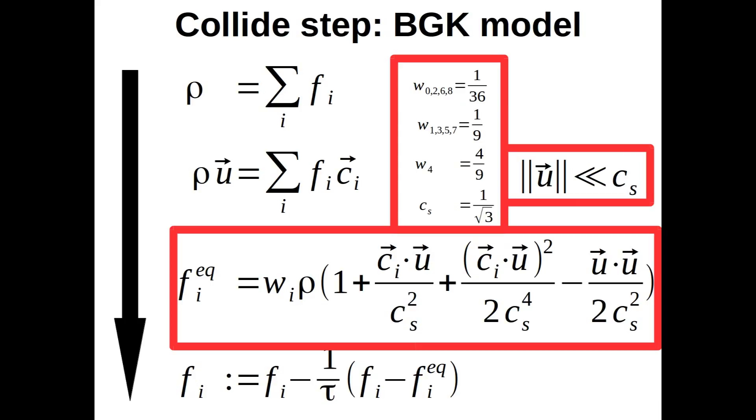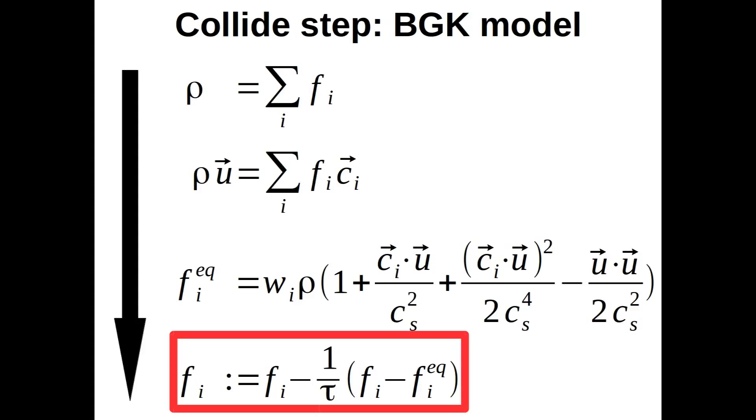Finally, we relax our distributions Fi towards the equilibrium distribution at a given collision frequency 1 over tau. Tau is chosen such that the correct viscosity of the considered fluid is obtained. For tau equal to 1, the relaxation process sets the distributions Fi exactly to the corresponding counterparts Fi equilibrium of the equilibrium distribution.